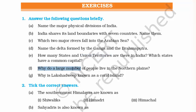Question six: Why do a large number of people live in the northern plains? Because there are many tributaries of the Ganga, Brahmaputra, and Indus rivers there. Where there are more rivers, there is more civilization and more people.